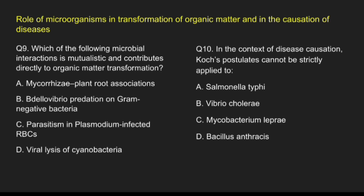Question 9: Which of the following microbial interactions is mutualistic and contributes directly to organic matter transformation? Option A, mycorrhizae-plant root association; Option B, Bdellovibrio predation on gram-negative bacteria; Option C, parasitism of Plasmodium in infected RBCs; Option D, viral lysis of cyanobacteria. The correct answer is option A, mycorrhizae-plant root association.